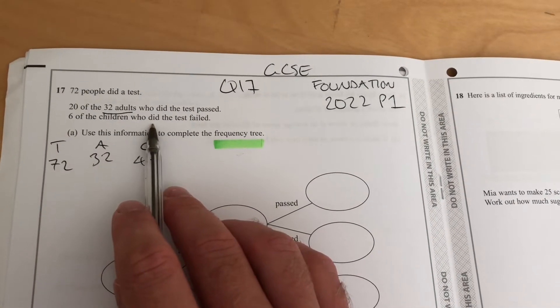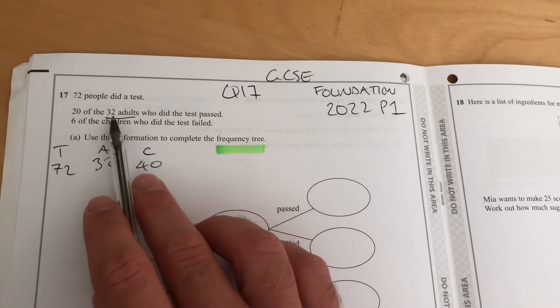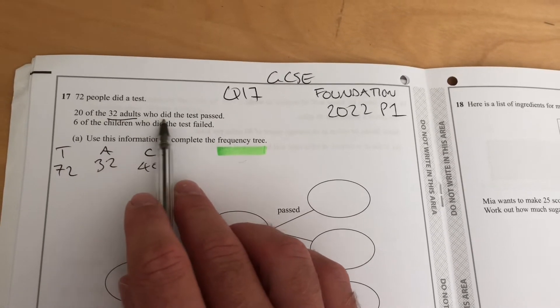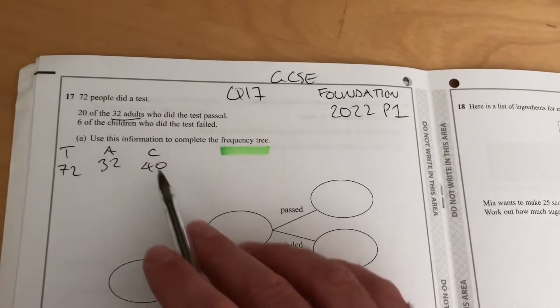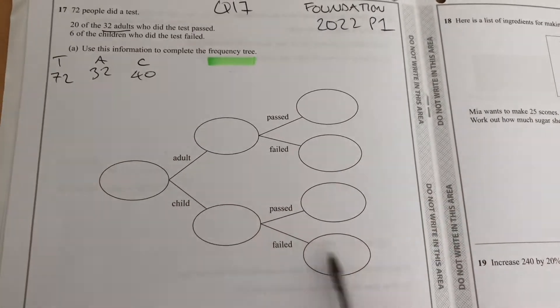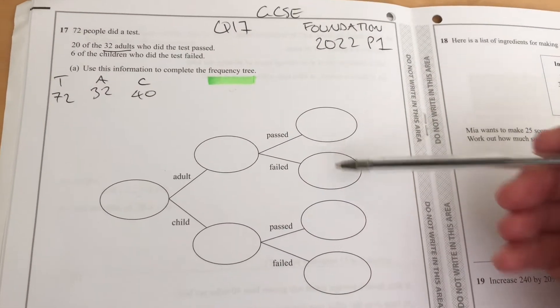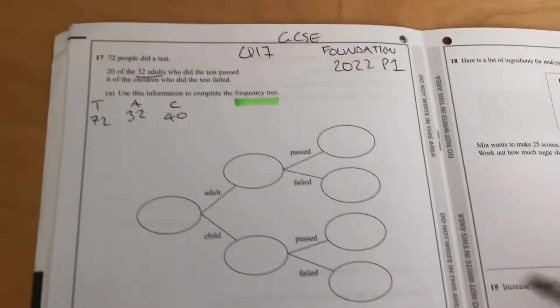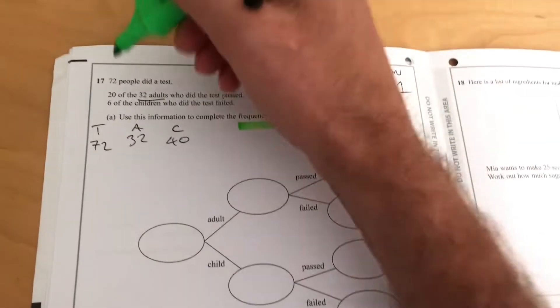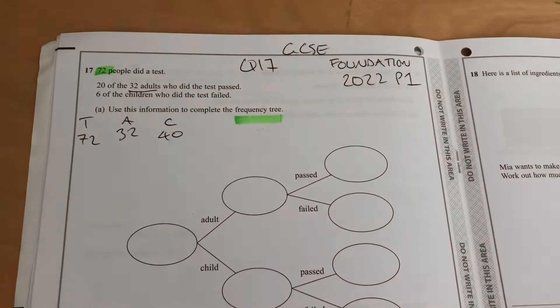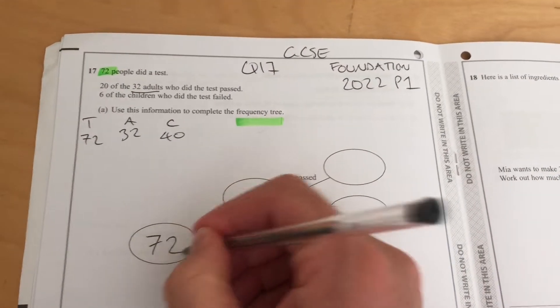Six of the children who did the test failed. 20 of the 32 adults who did the test passed. So we have to fill this information into this tree: adults and children, passed and failed. It's a three-mark question. Let's start with the first piece of information. 72 people did the test, so I'm going to fill that in there.